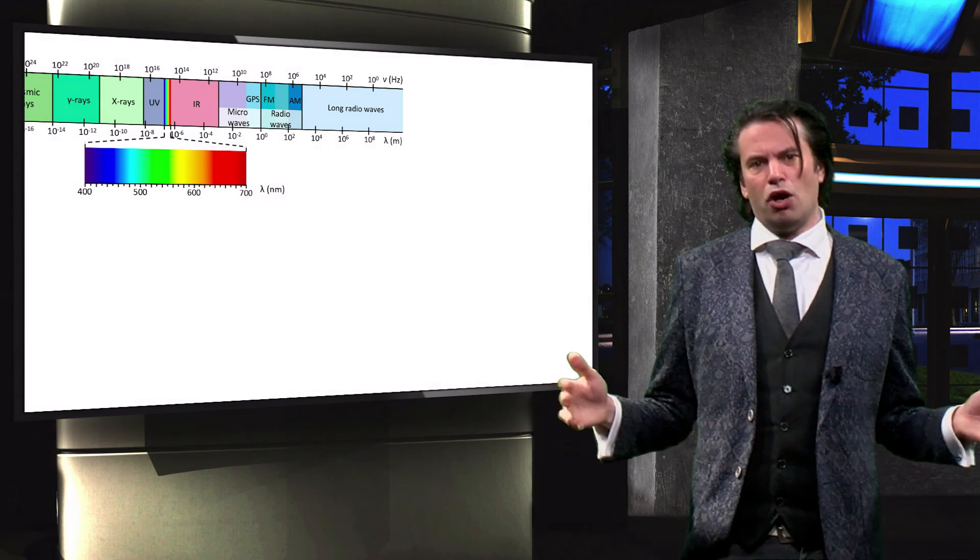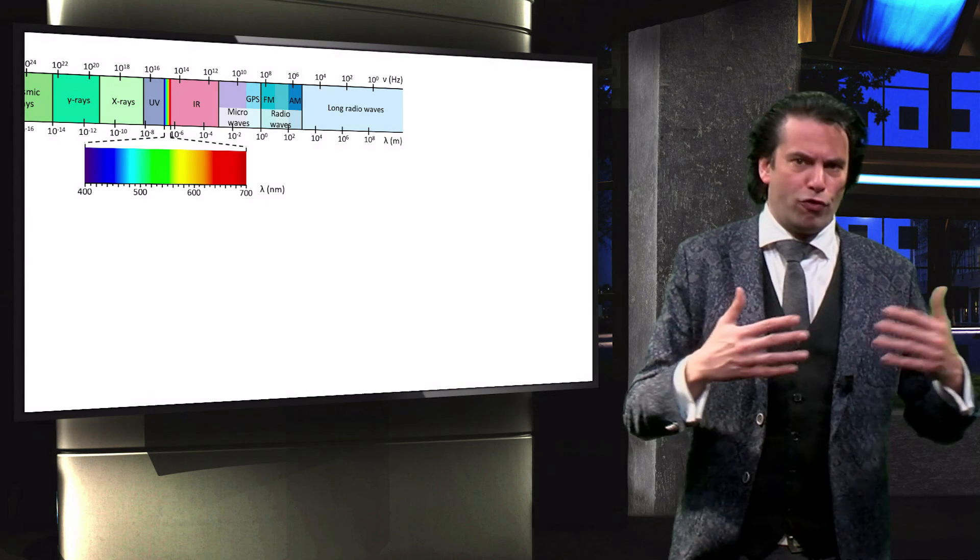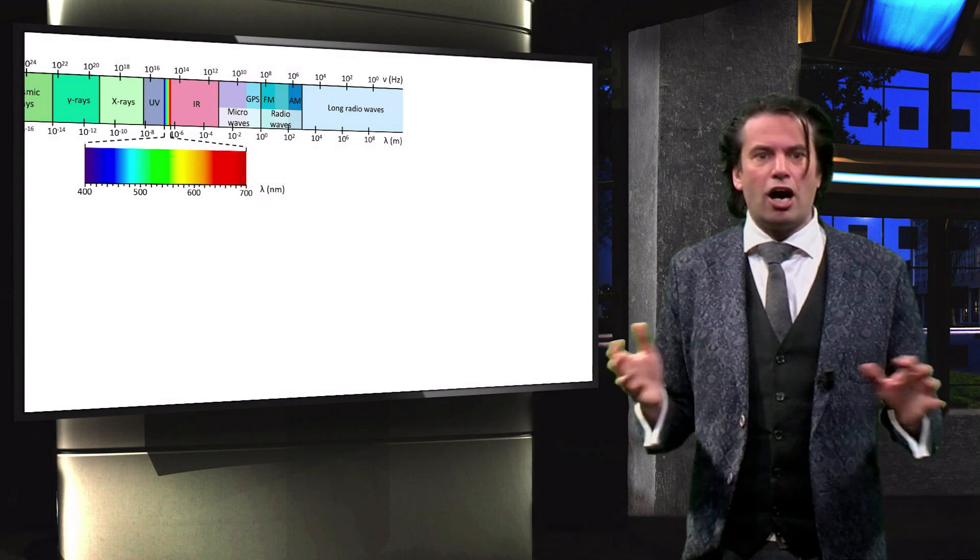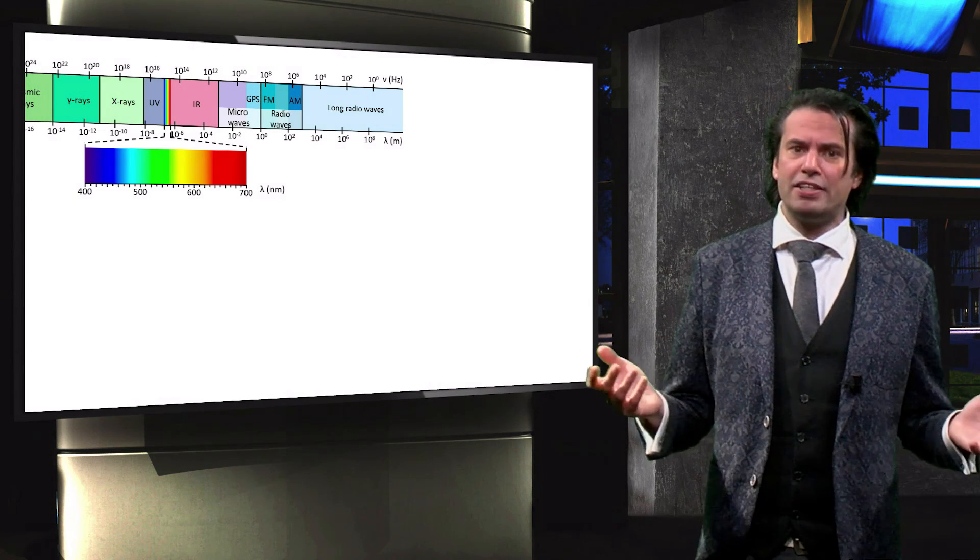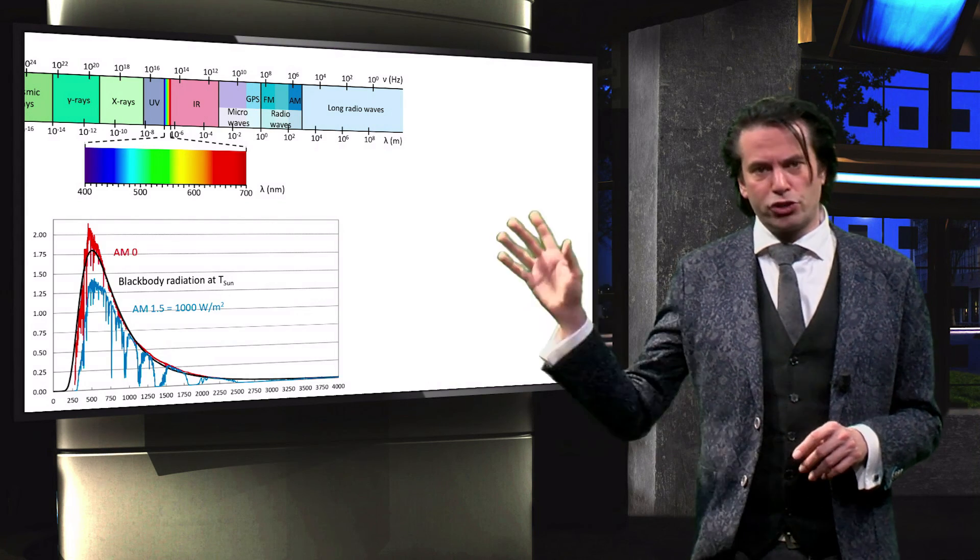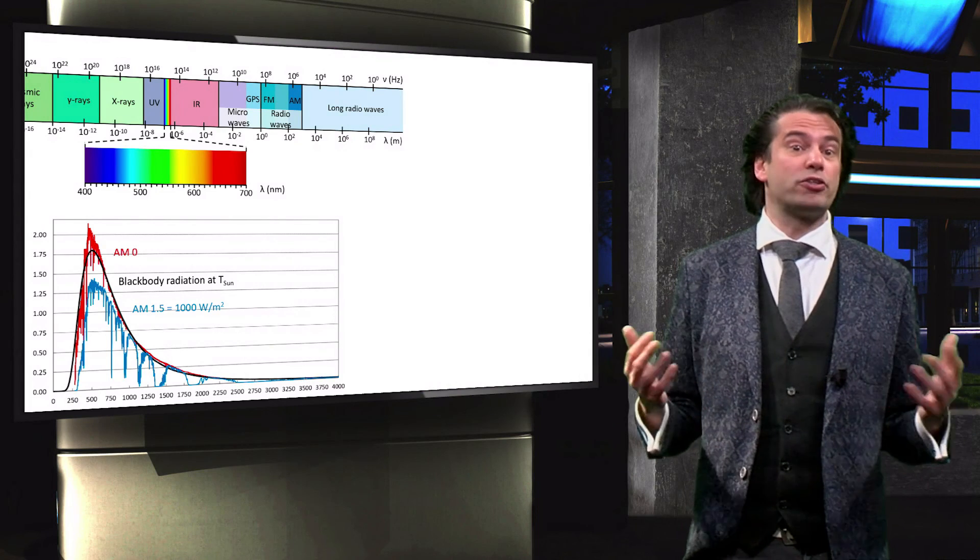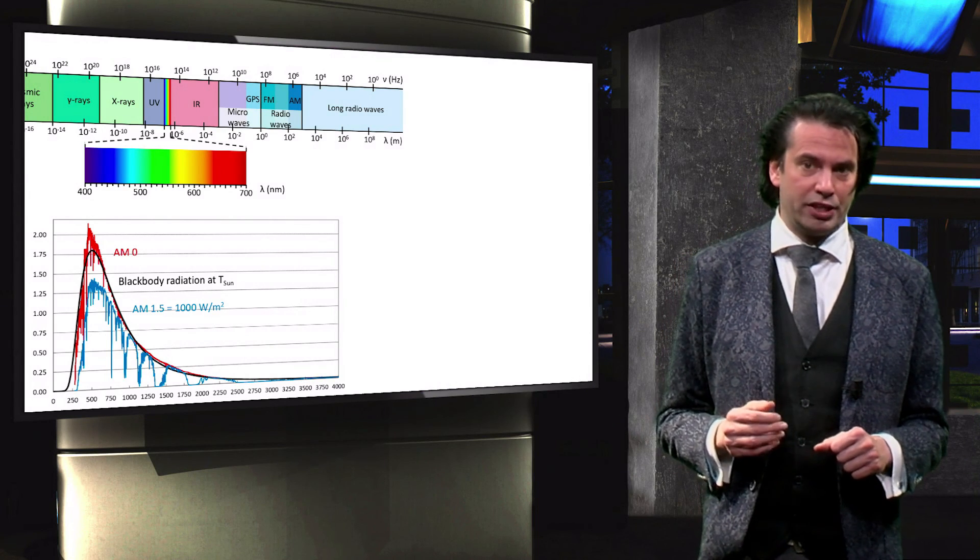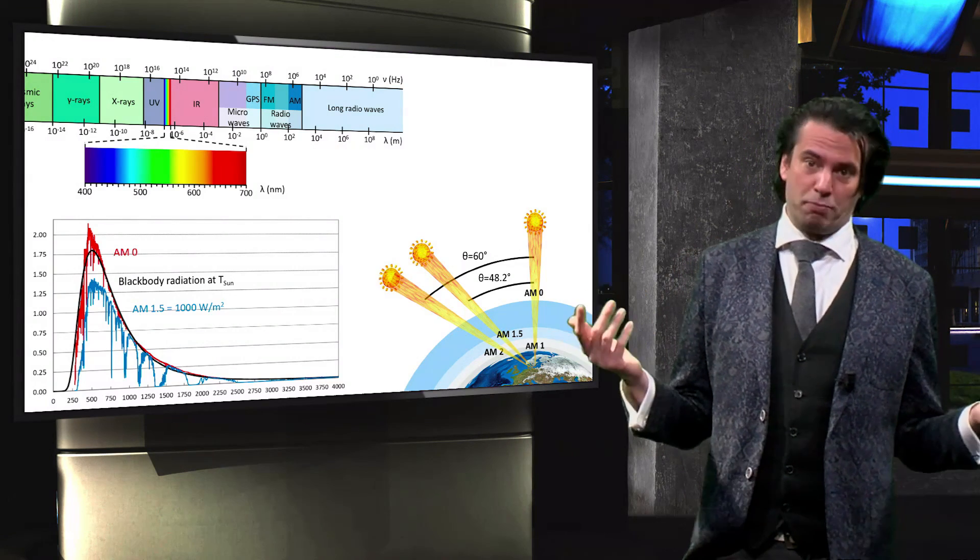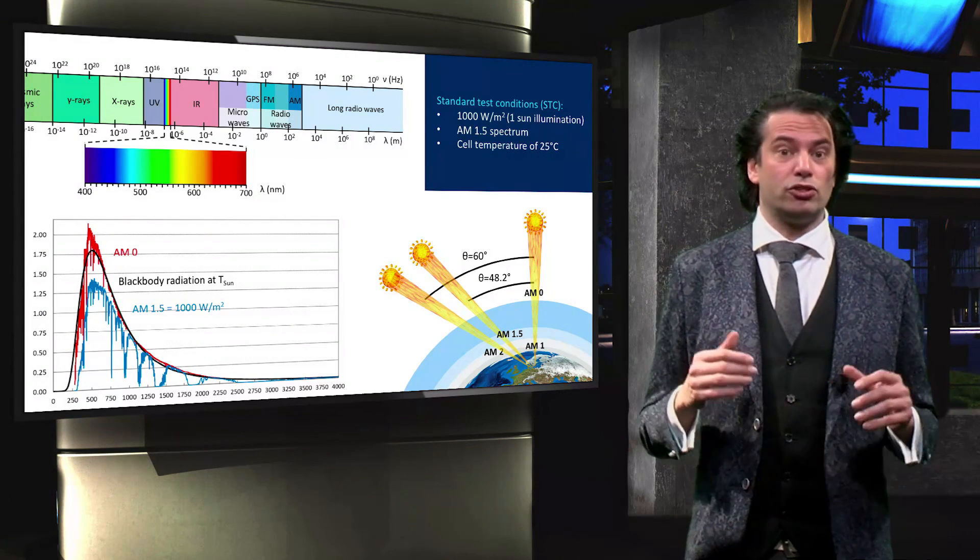In summary, we described how sunlight can be described as a flow of photons or as a wave. We saw how wavelength and frequency are important properties that define different ranges in the spectrum of electromagnetic radiation. We discussed Planck's law for black body radiation and compared it to spectral radiance outside the atmosphere and on the surface of the earth. We discussed the concept of air mass, and finally we defined the standard test conditions and solar simulators. In the next video we will discuss the photovoltaic effect.